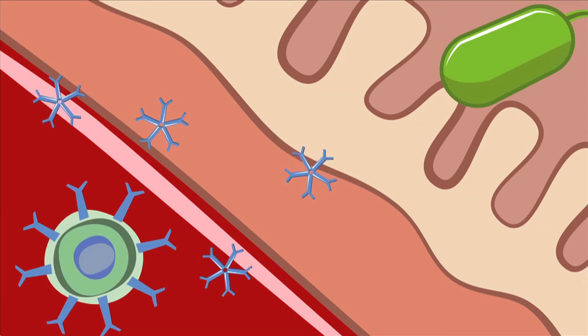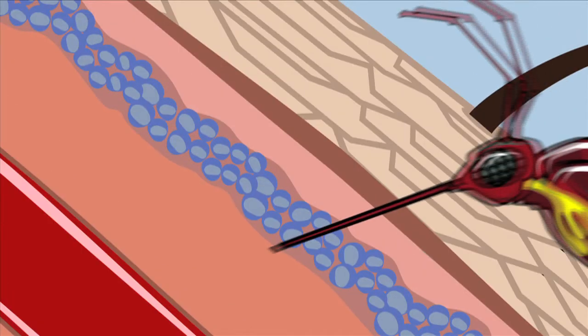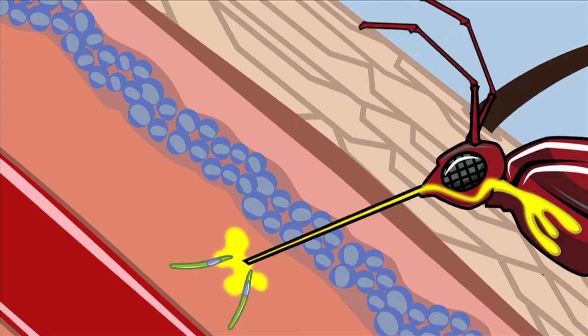These antibodies can recognize the same glycan when expressed at the surface of plasmodium sporozoites. Plasmodium sporozoites are dropped in the skin by anopheles mosquitoes and are the causative agent of malaria.